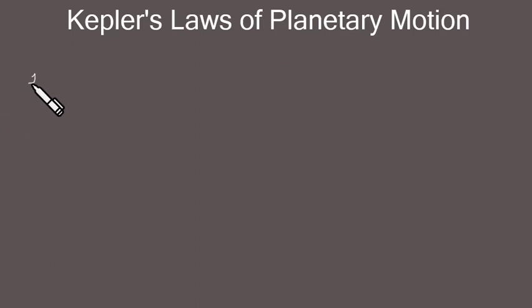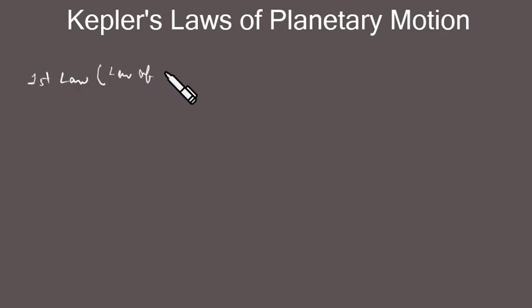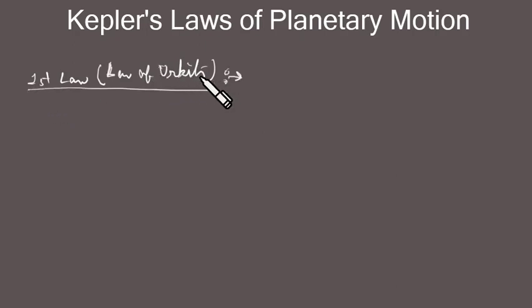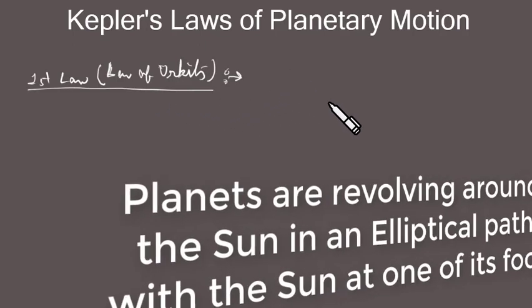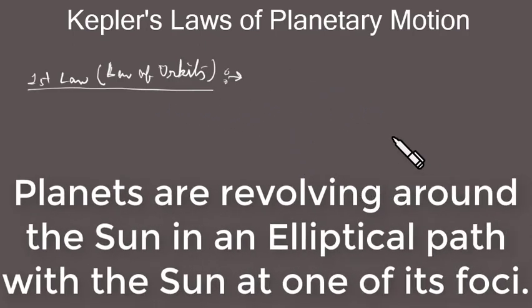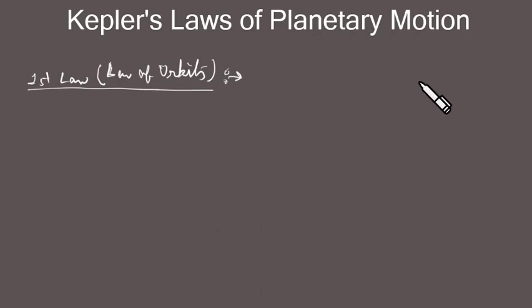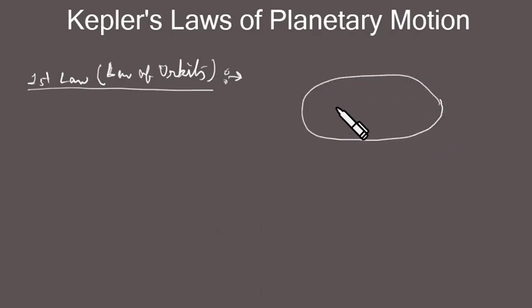The first law is also called the Law of Orbits, because this law basically explains the structure of the orbits of the planets. It states that all the planets are revolving around the Sun in an elliptical path, with the Sun at one of its foci. This means that if we imagine an ellipse, which has two foci.